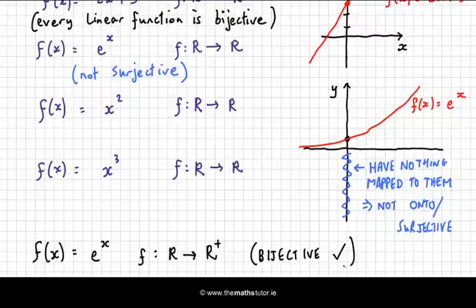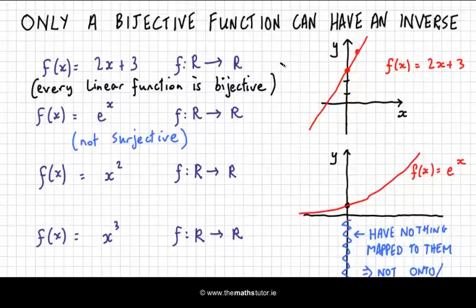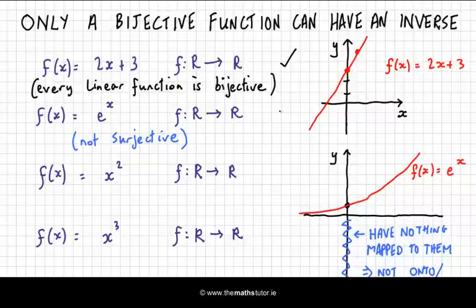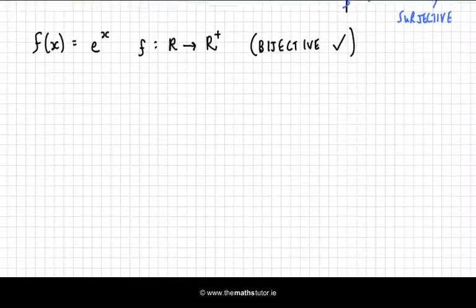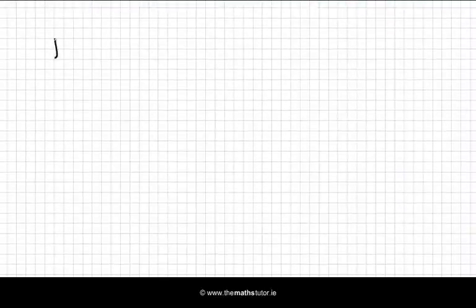So so far we've seen one that is definitely bijective, one that definitely isn't because the co-domain has got elements on it which don't have anything mapped onto them. And let's have a look at f of x equal to x squared. f of x equal to x squared, let's do a quick sketch of it.